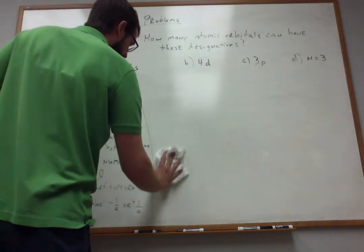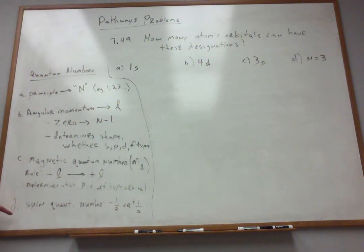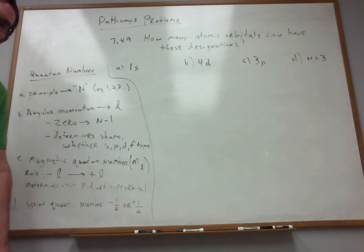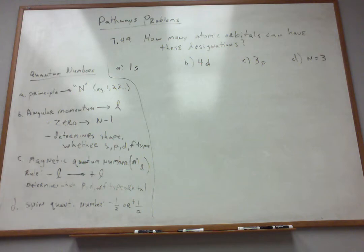Now, the last quantum number is known as the magnetic spin quantum number. And this one's pretty easy. It can only take two values, always. Either negative 1 half or positive 1 half.